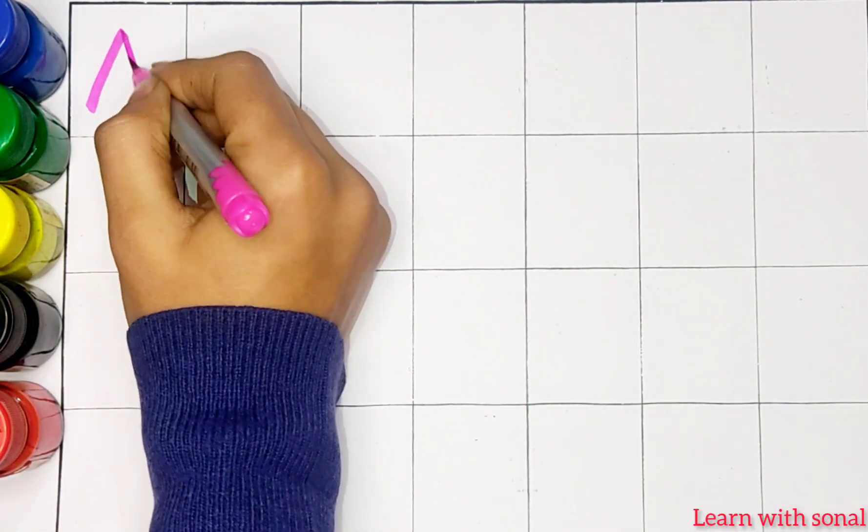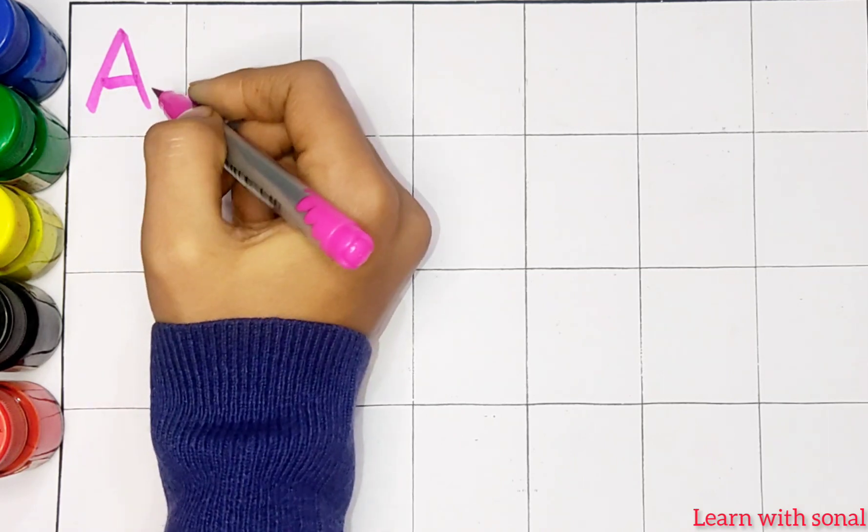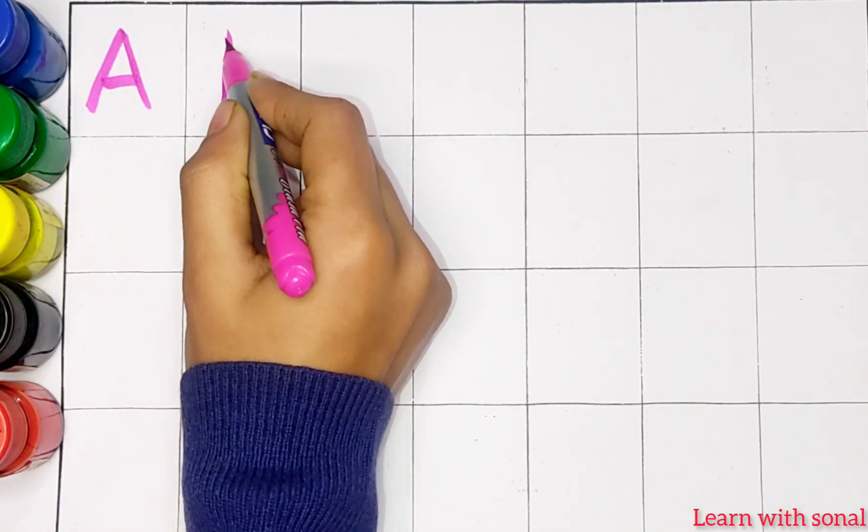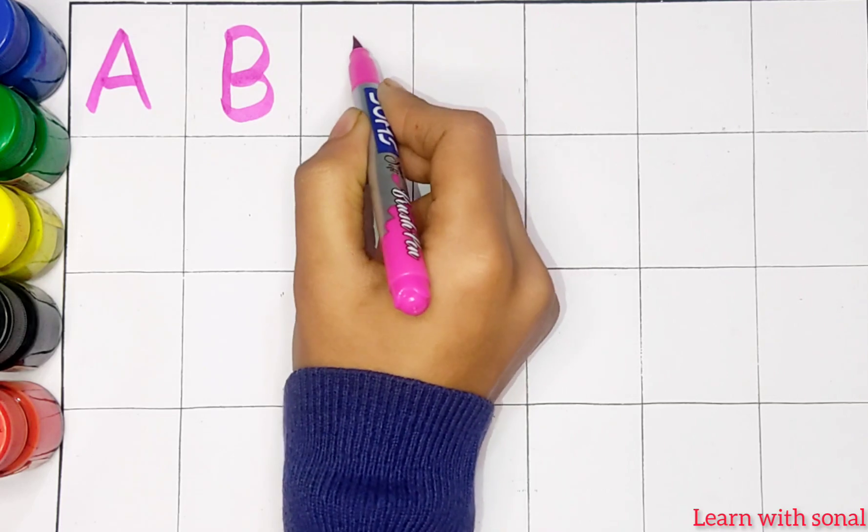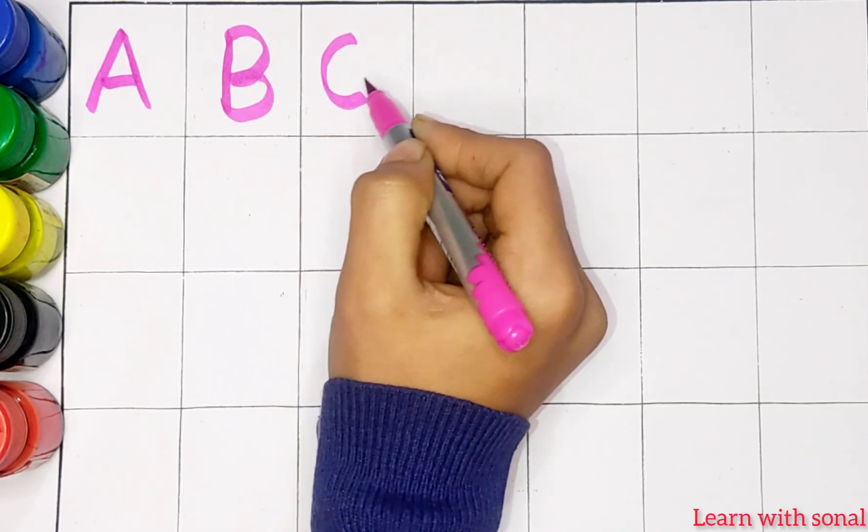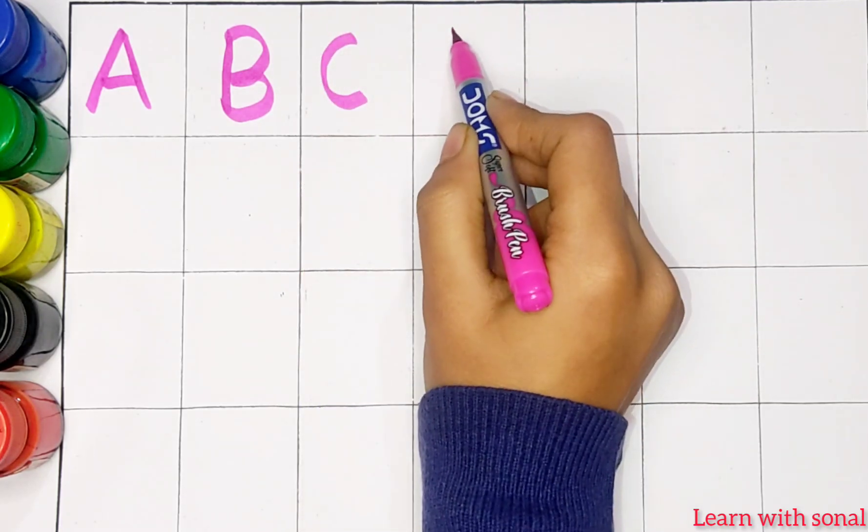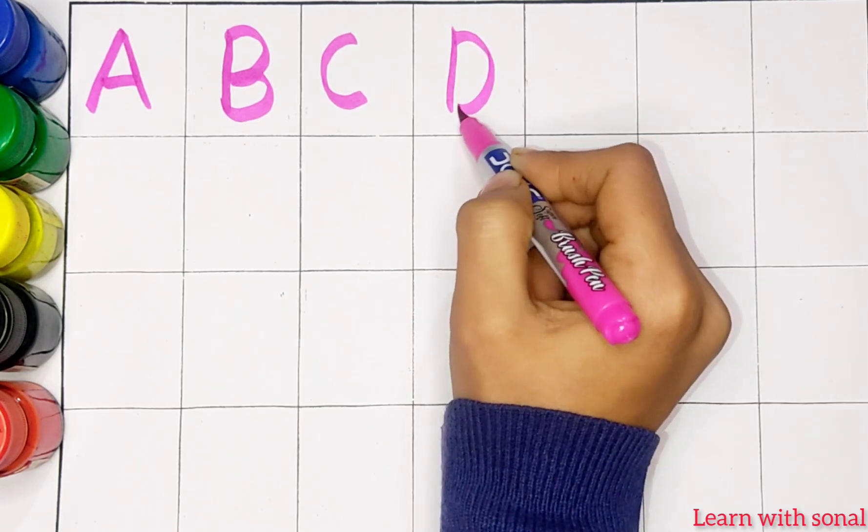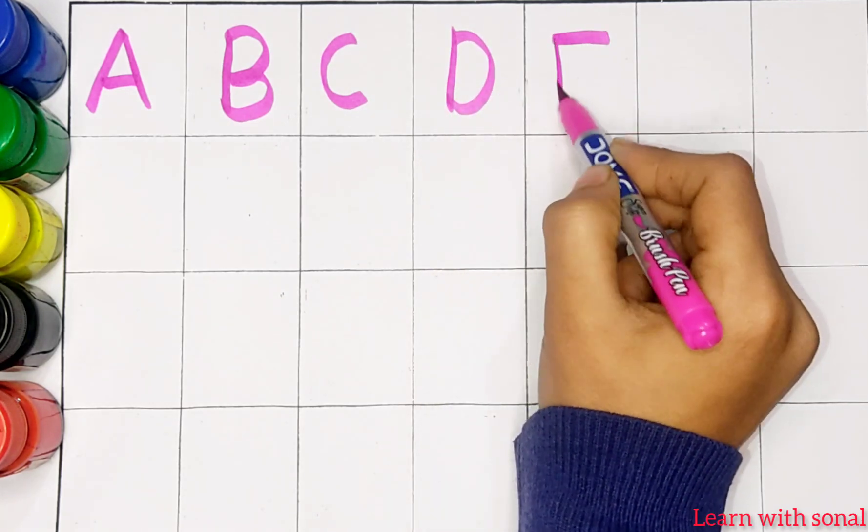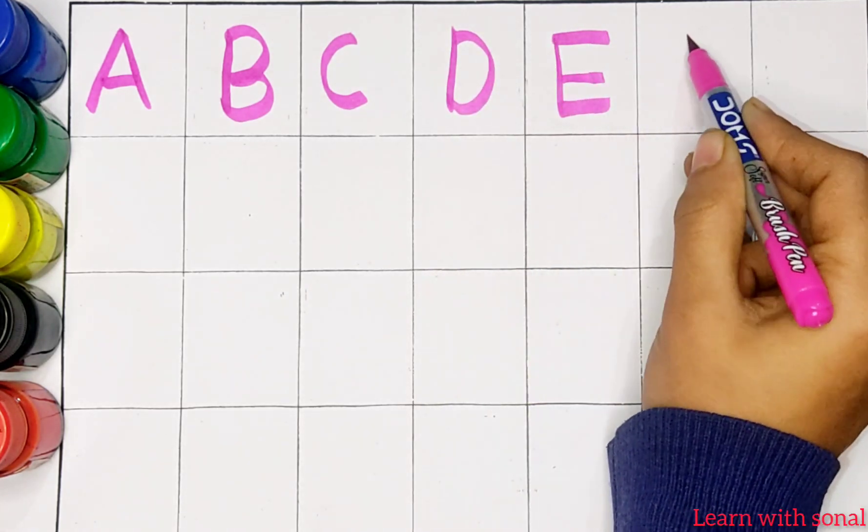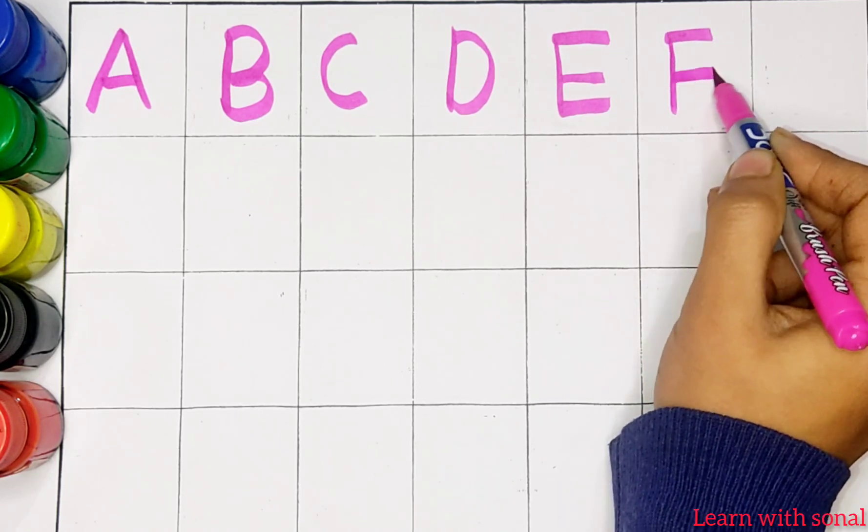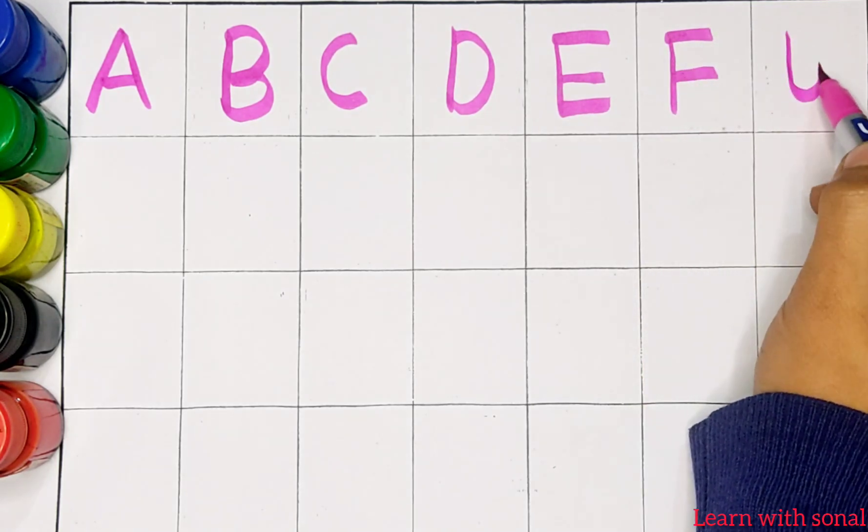A. A for apple. B. B for ball. C. C for cat. D. D for dog. E. E for eagle. F. F for fish.